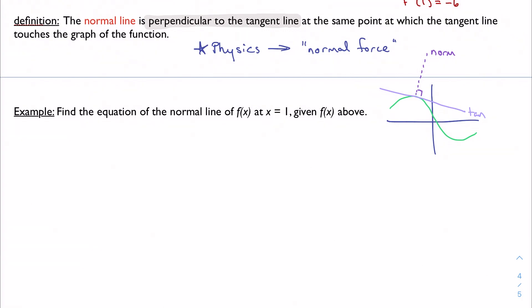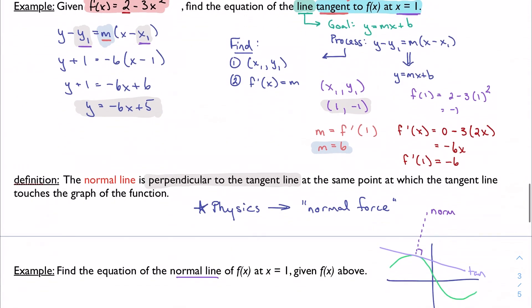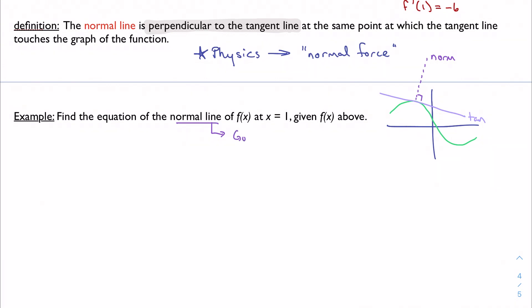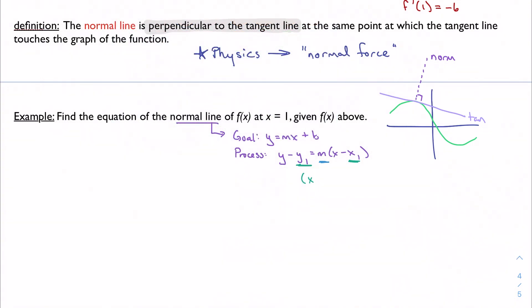Find the equation of the normal line of f(x) at x equal to 1 given f(x) above. Well, this is helpful. We've already done a lot of the legwork because we just dealt with this function. Our goal is the same, right? We want to find a line. So we're going to stick with the same process. Start here. I need to find the same thing here, which means I need to find the same things. I need to find a point and I need to find a slope. Well, we've already done the work from the last problem because I'm dealing with the same function. I know that my point will be the same. We're talking about the exact same point in the graph. That's great. That's helpful. That saves us a lot of time. If you can draw on things that you've done already in a problem, do it. Don't waste your time doing the problem over again.